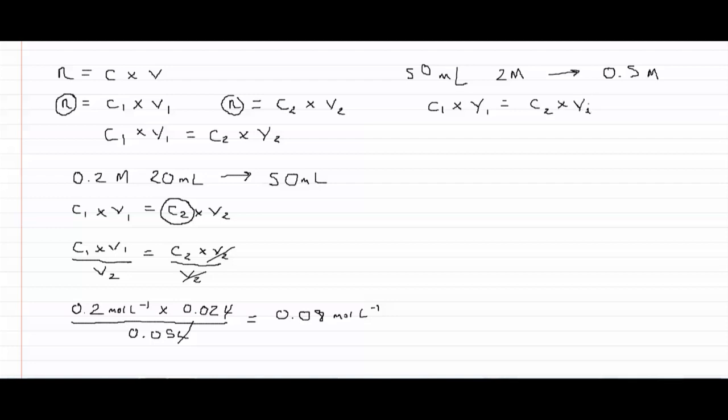And this time our unknown quantity is the final volume V2. So again we rearrange this time dividing through by C2. So we say that C1 times V1 over C2 is equal to V2.